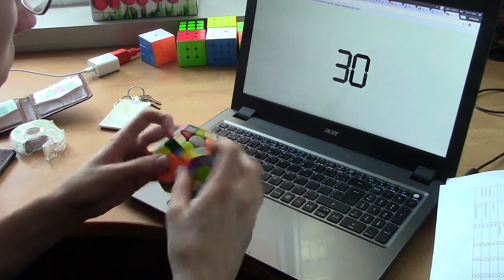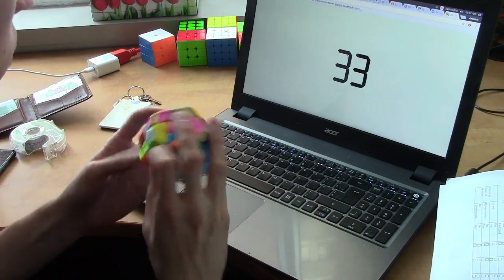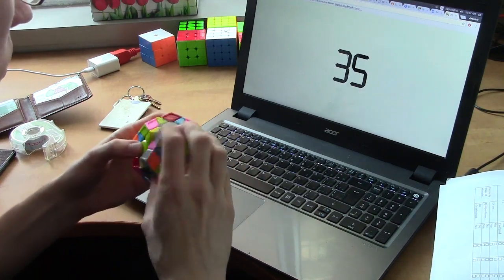It's like the Moyu 6x6. Without the magnets, it's pretty bad, but with the magnets, it turns into a pretty amazing cube.